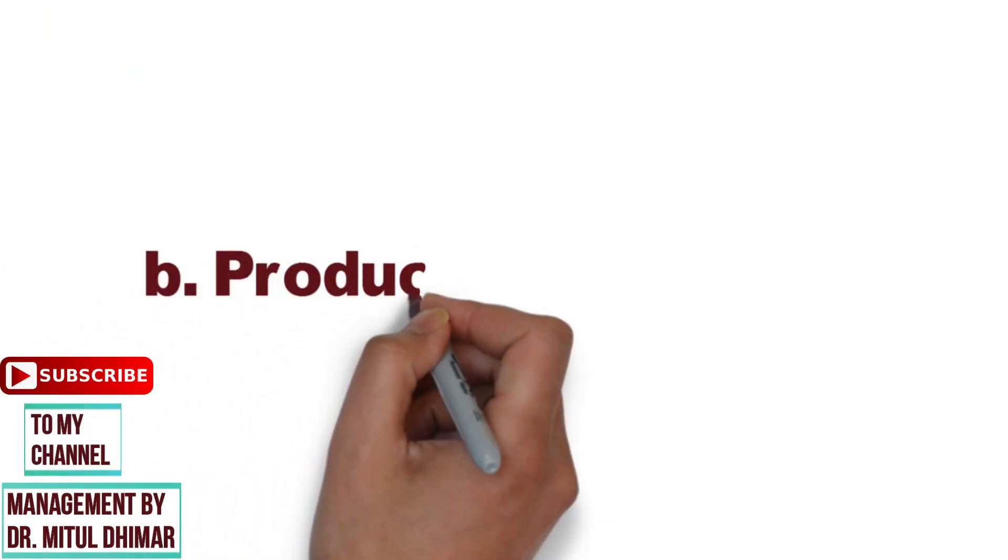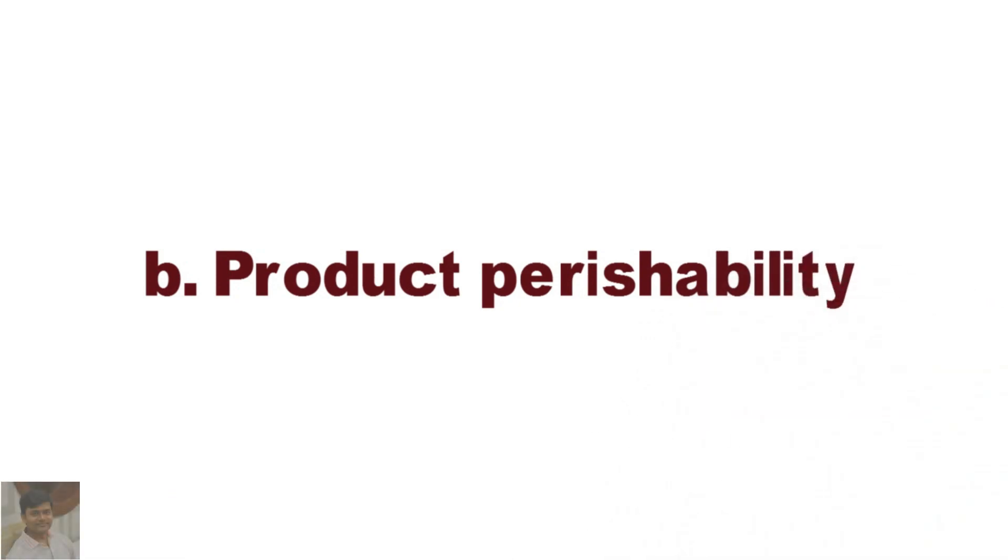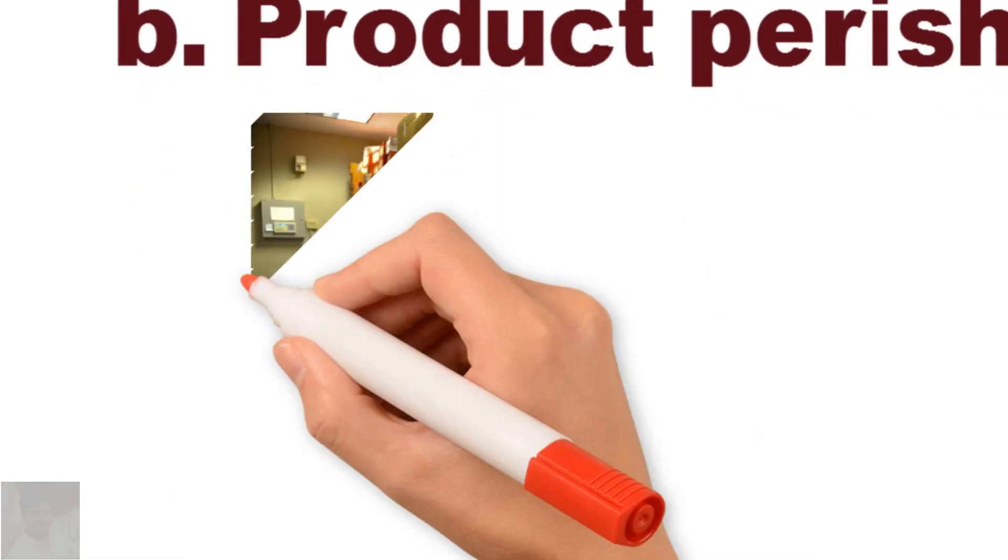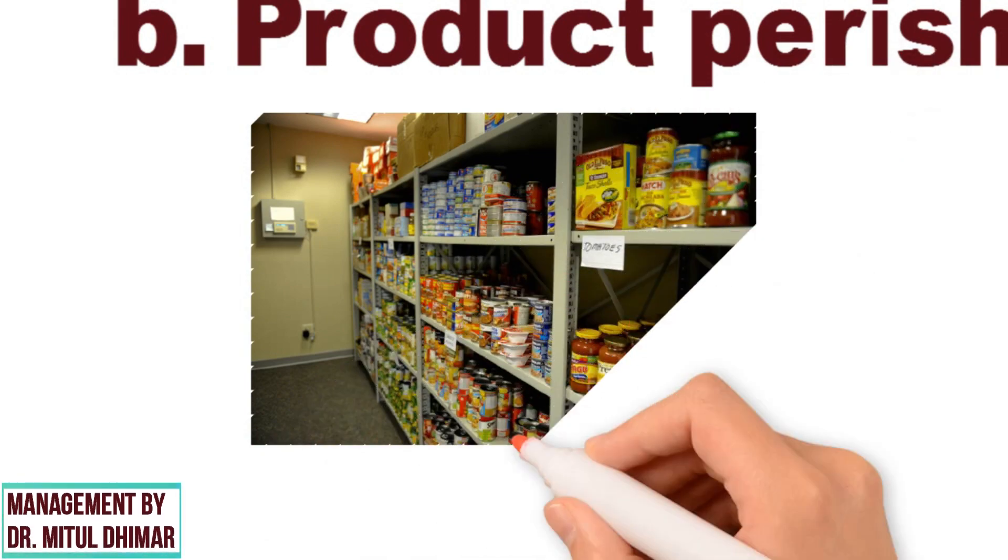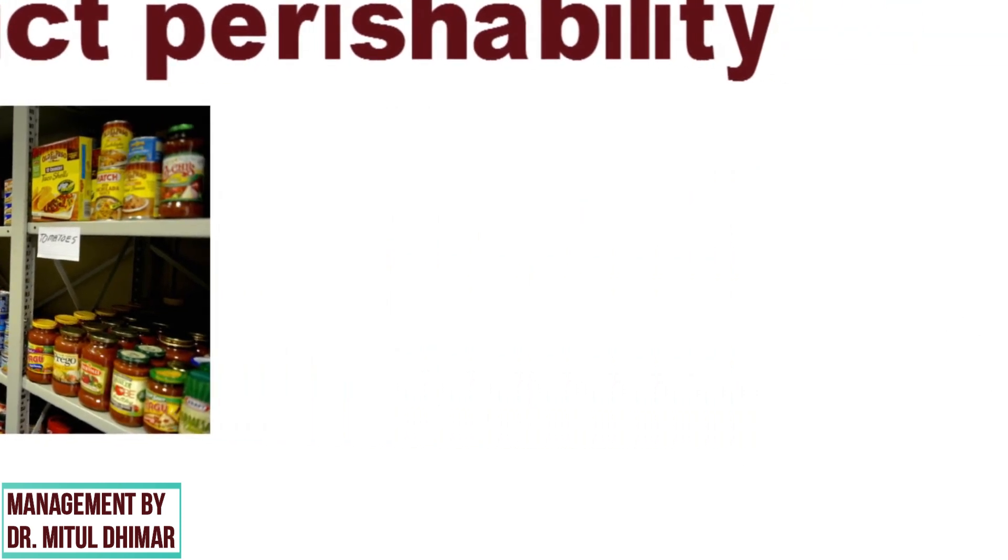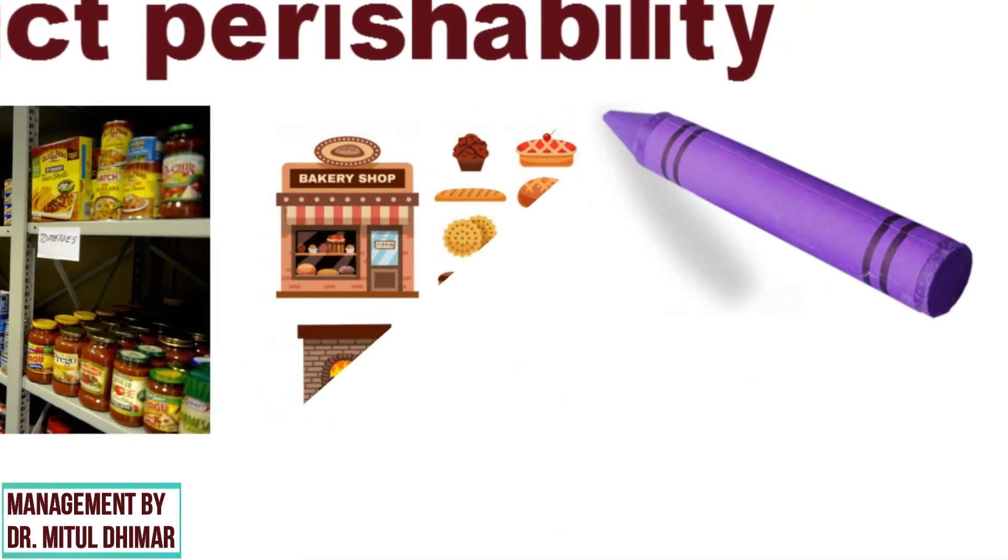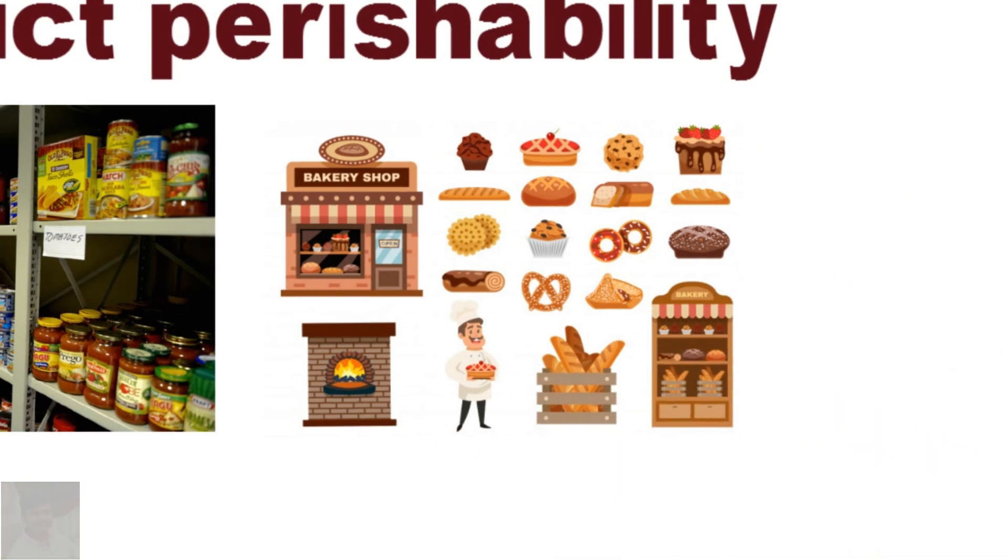Number two is product perishability. Perishable products must be sold and consumed immediately after production. Therefore, perishable products direct or short channel is usually recommended. For example, most fast food and bakery products are distributed by retailers.